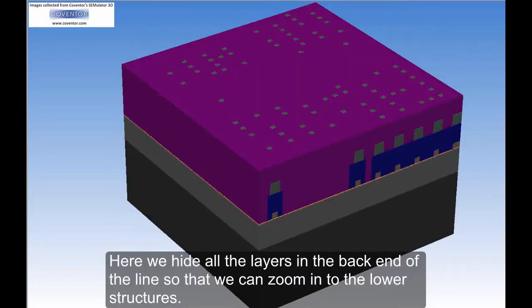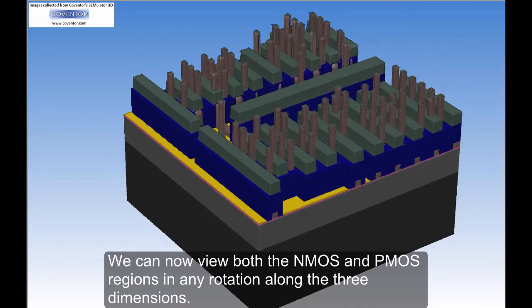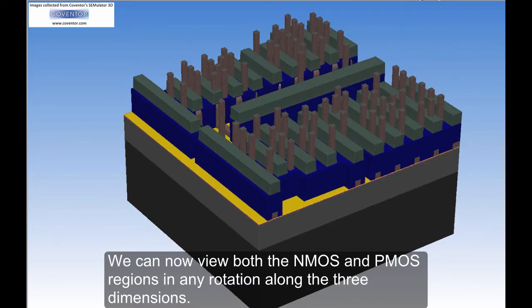Here we hide all the layers in the back end of the line so that we can zoom in to the lower structures. We can now view both the NMOS and PMOS regions in any rotation along the three dimensions.